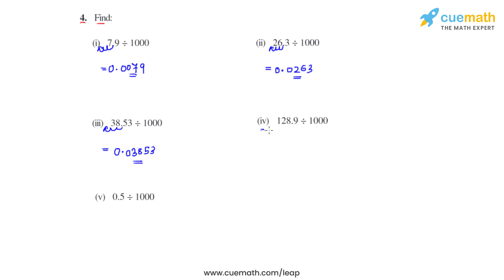Coming to the fourth bit, we have 128.9 divided by 1000. So we will have to move the decimal 3 places towards right and the answer for this becomes 0.1289.